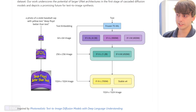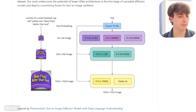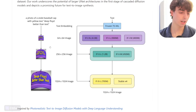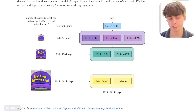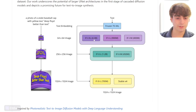And if that text didn't make any sense to you, here is a visual representation of it. The prompt is put in — 'a photo of a violet baseball cap with yellow text, DeepFloyd is better than text' — generates a 64x64, upscales it to 256x256, then to 1024x1024. You can see it's actually quite simple how it all works: Frozen T5-XXL, the different IF models, then to the IF upscalers. Simple process, yet quite effective.